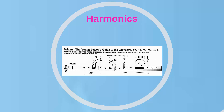The notation for artificial harmonics shows the note to be fingered, the note to be touched (a diamond-shaped note a perfect fourth above the fingered note), and usually, but not always, the pitch that results (a cue-sized note two octaves above the fingered note). Artificial harmonics are relatively rare in orchestral writing, since they are more difficult to produce.